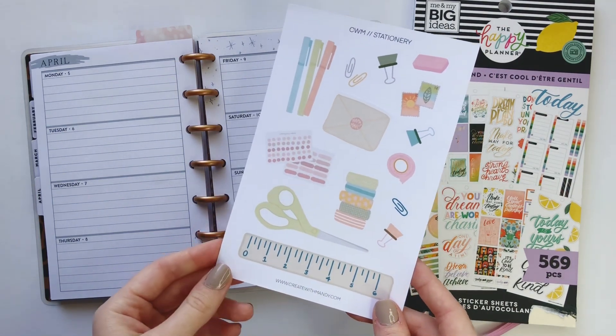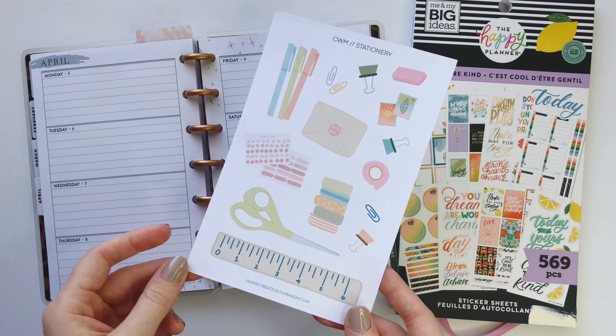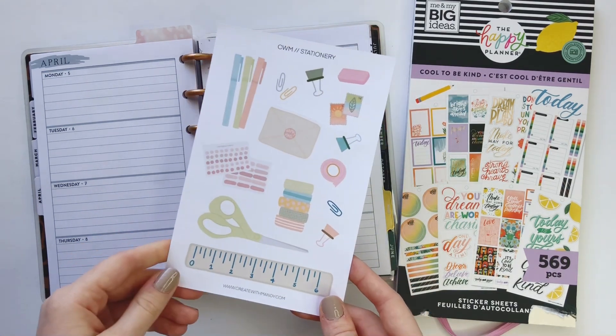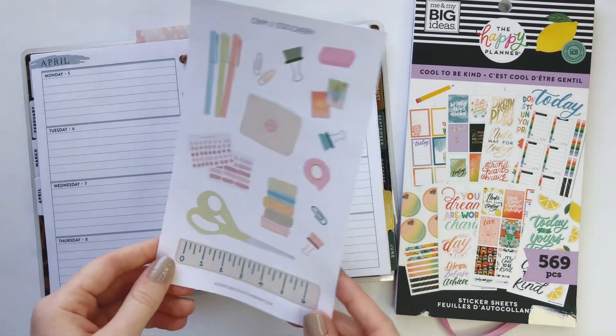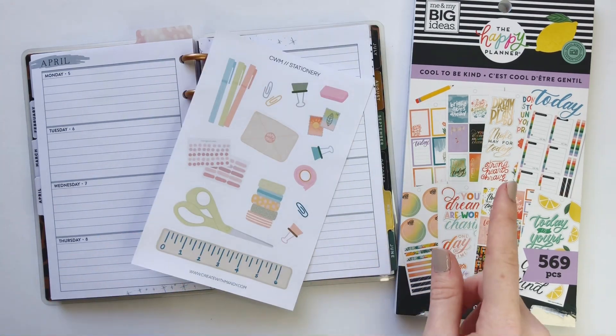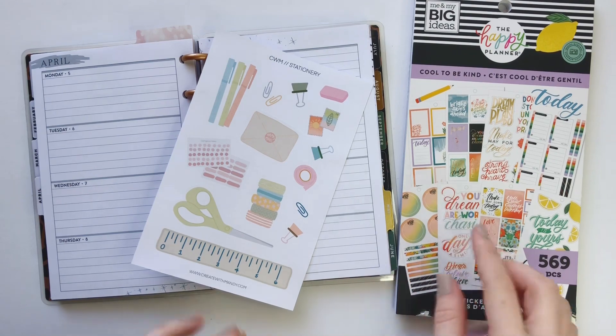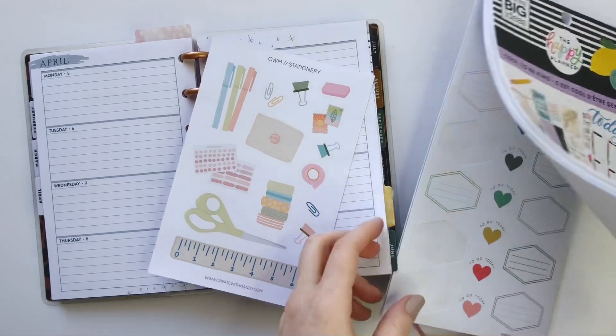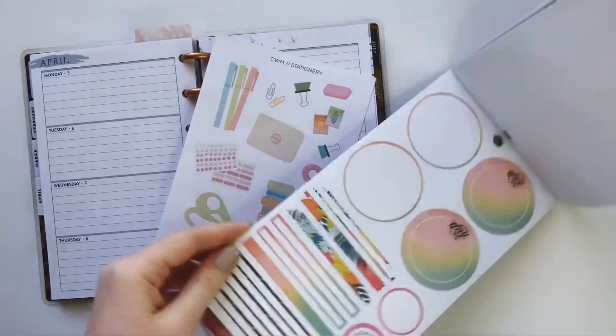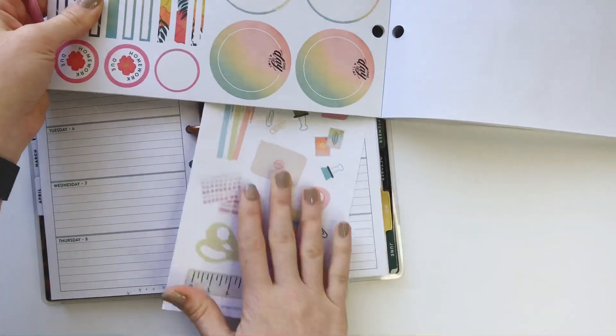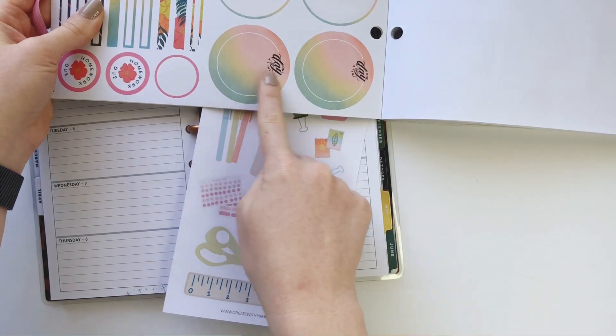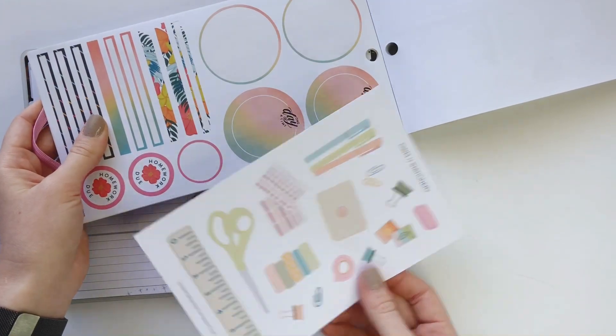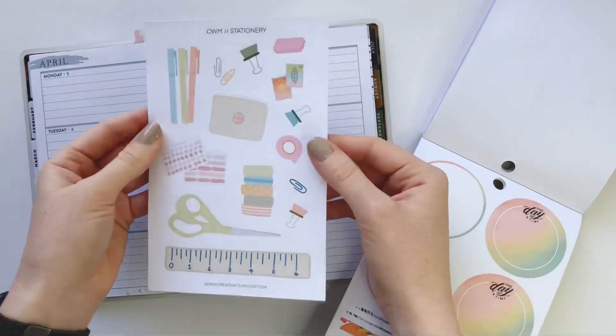For you guys watching this video, just you guys, so only people who watch this video will have that code down below. So you can go grab this one at a discount. I'm gonna pair it with Cool to Be Kind because I think there's a lot of similar soft colors in here, especially these guys in the back. I love these circle stickers and look how nicely that matches.